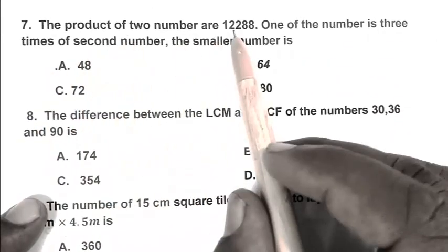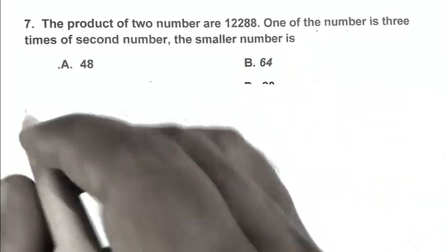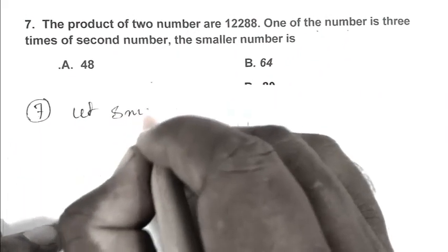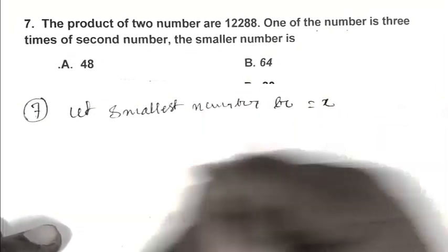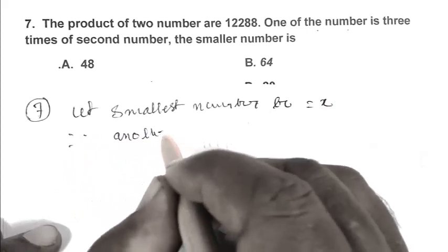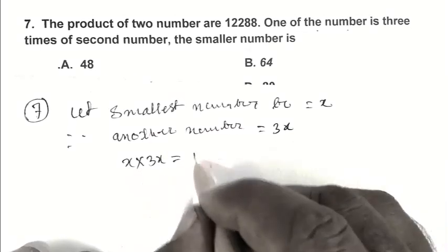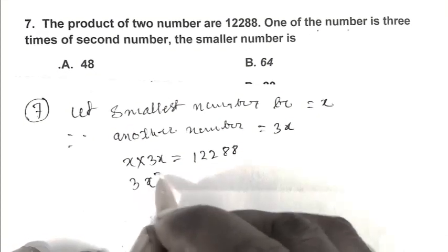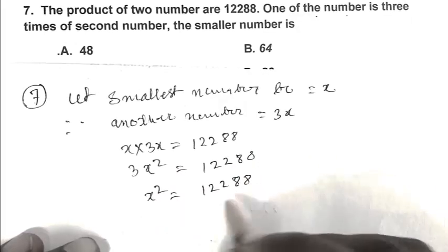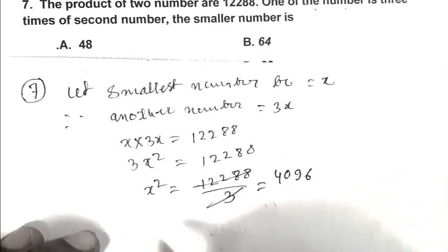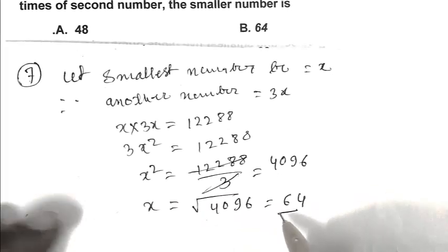Question number 7. The product of two numbers is 12,288. One number is three times the second number. What is the smallest number? Let the smallest number be X. The other number is 3X. X into 3X equals 12,288, so 3X squared equals 12,288. X squared equals 4096. X equals square root of 4096, that is 64. So B is the right answer.